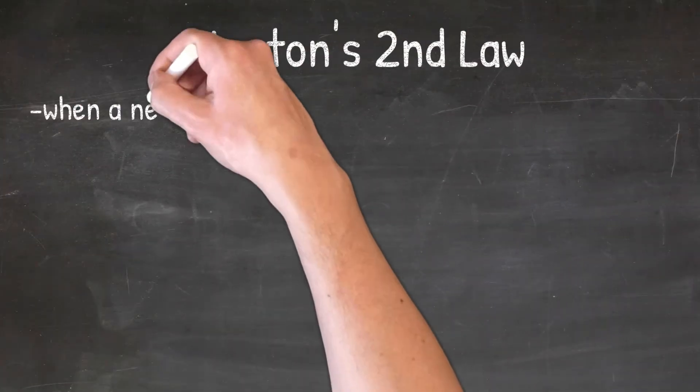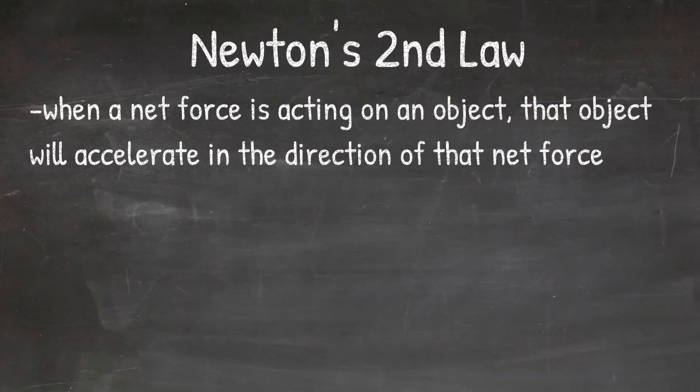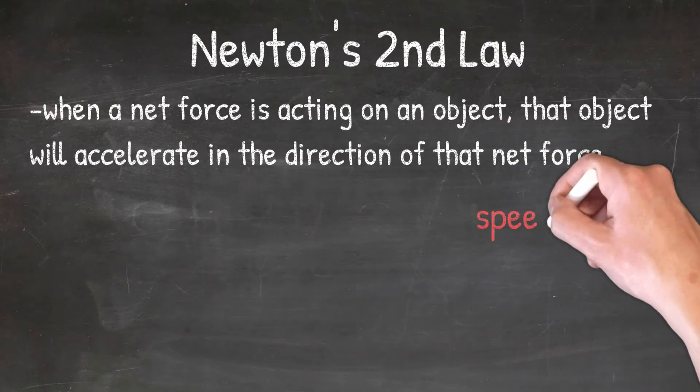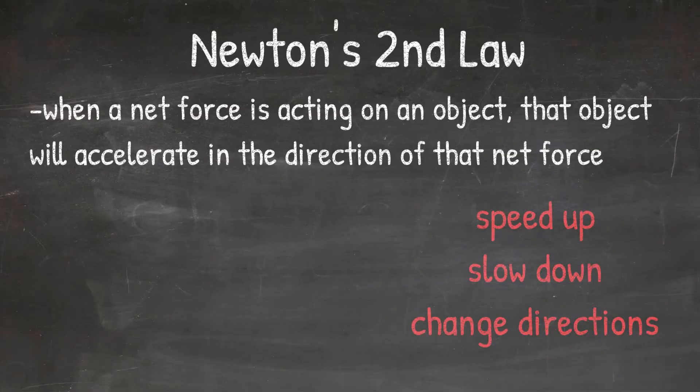Newton's second law of motion states that when a net force is acting on an object, the object will accelerate in the direction of that net force. Acceleration just means to speed up, slow down, or change directions. So what Newton's second law is telling us is that if you have a net force acting on an object, then that object is either going to speed up, slow down, or change directions.